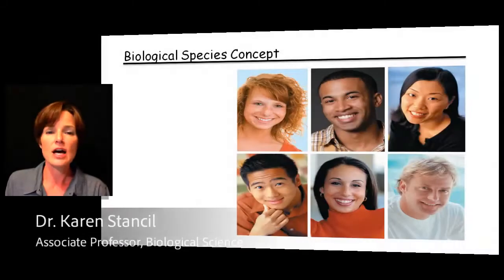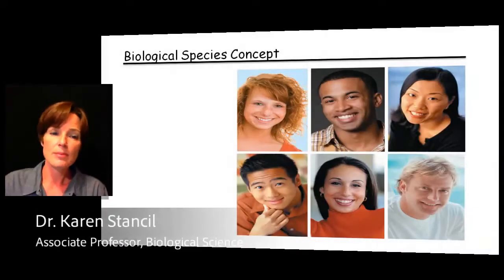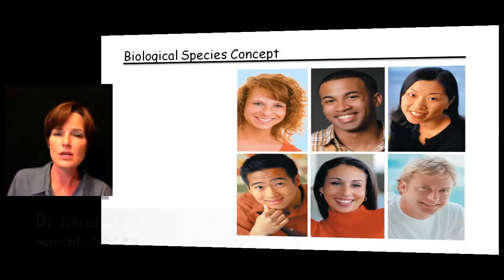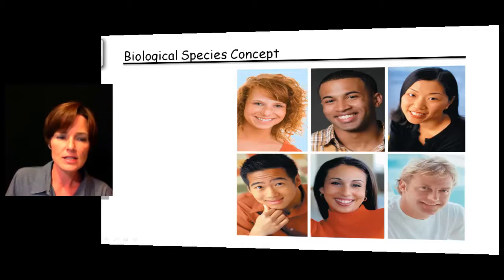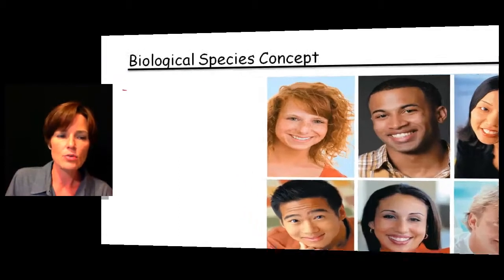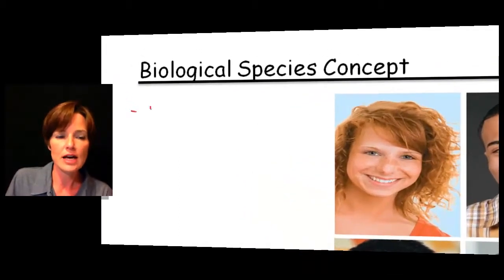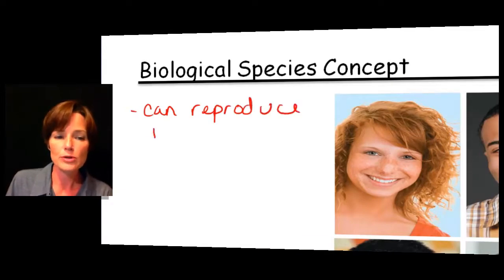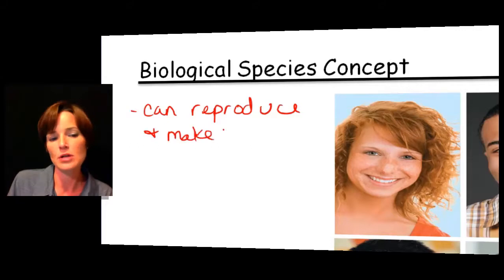There are a lot of different ways that a species is defined, and the biological species concept is really just one of these definitions. With the biological species concept, we're talking about individuals that can reproduce — and not only can they reproduce, but they can reproduce and make viable offspring.